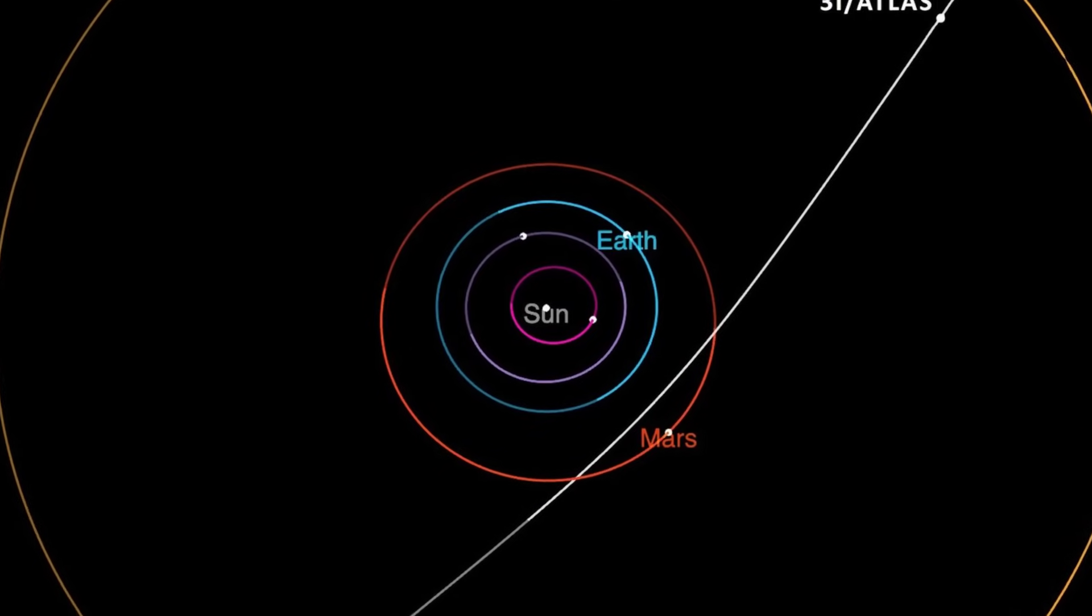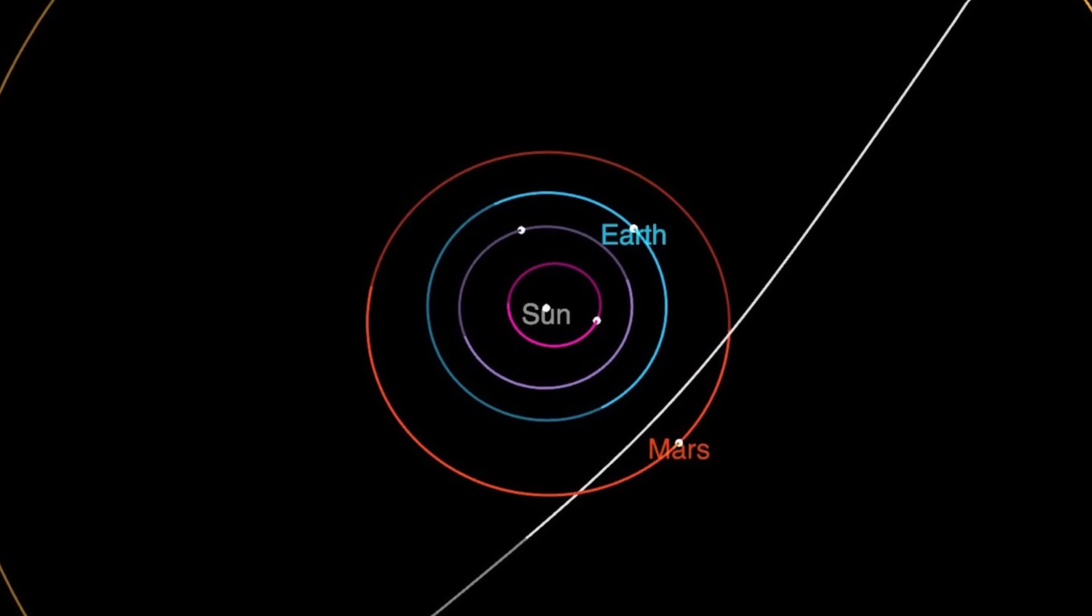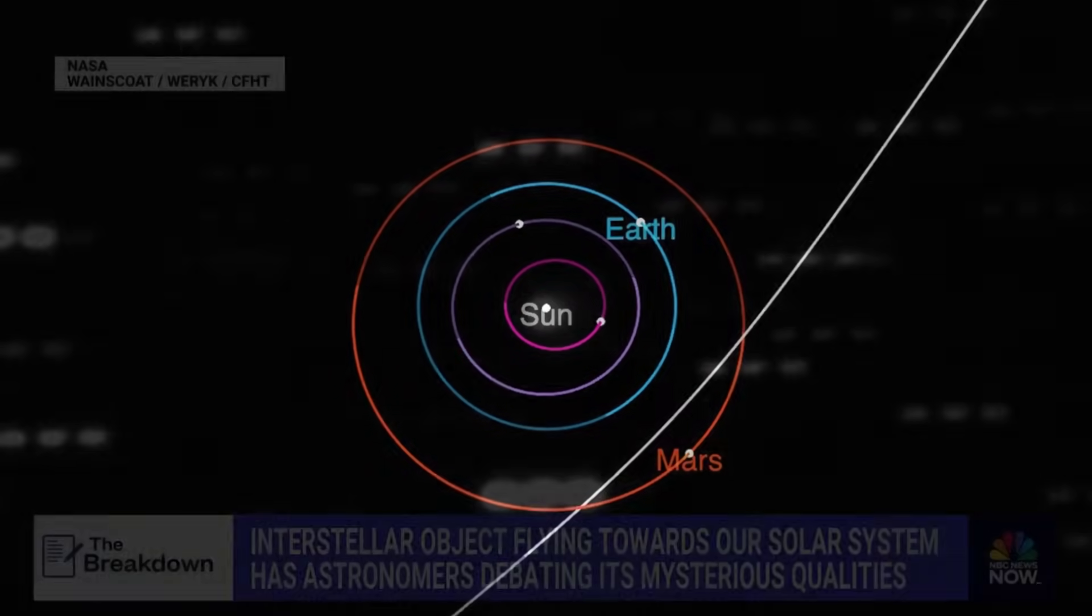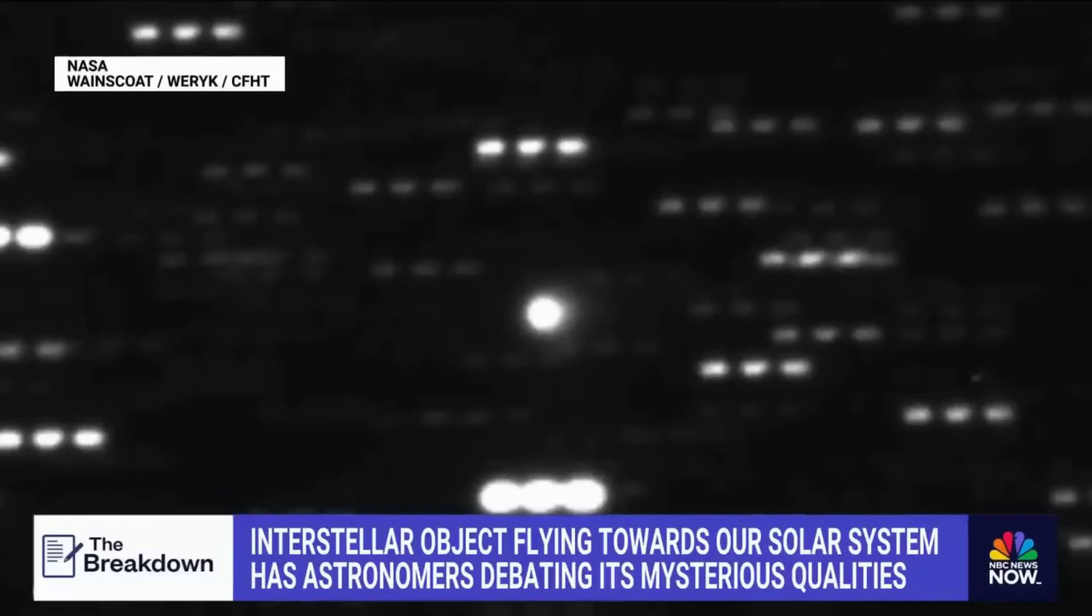If a comet can act like this, what isn't being told about what's really moving among the planets, and why are scientists now asking if this is natural, or something far stranger?